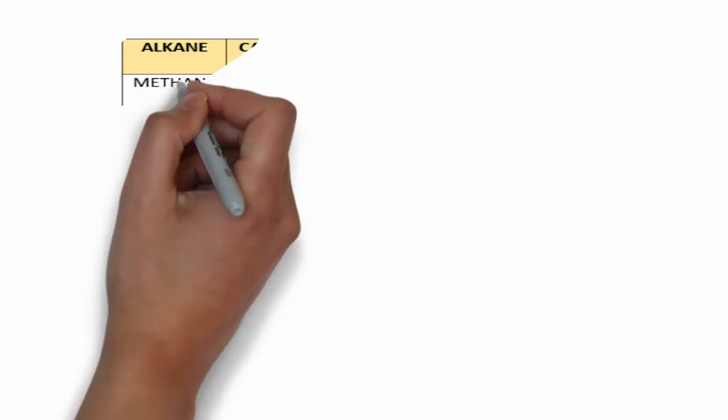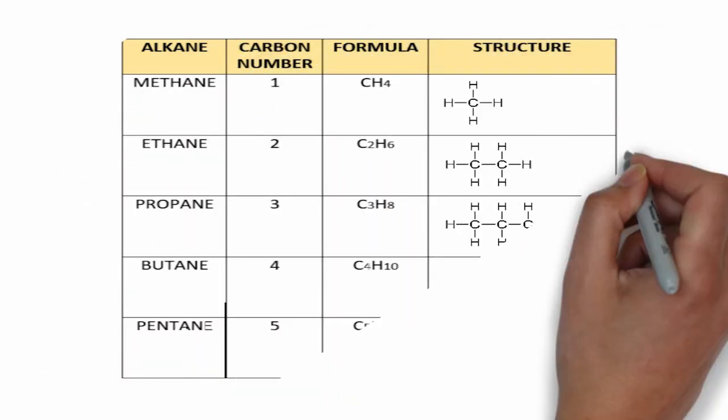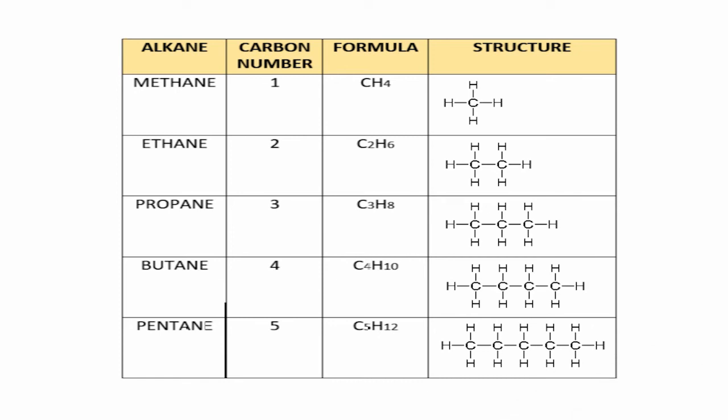The homologous series of alkanes uses the ending '-ane.' Methane has one carbon atom, ethane two (C2H6), propane three, butane four, and pentane five. All these members differ by a CH2 group as you move down the series — remember, the difference between consecutive formulas is always CH2. All alkanes contain carbon-carbon single bonds and are saturated hydrocarbons.